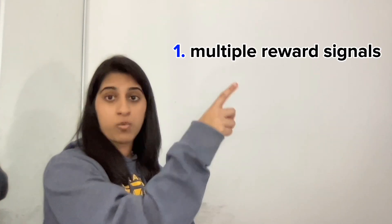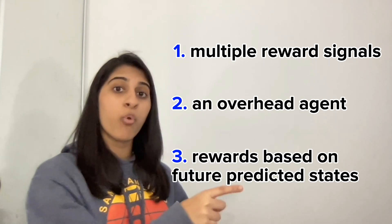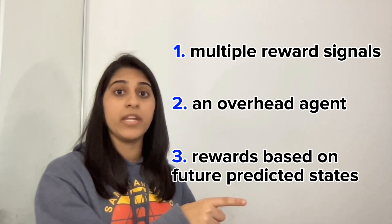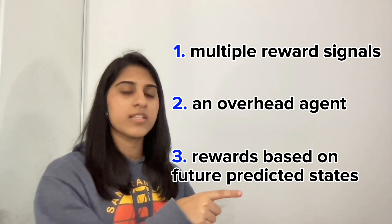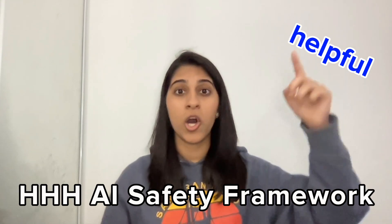Currently, people in the industry are trying new methods to solve this reward hacking issue, including my work with PhD students from Berkeley and Stanford. Some of these methods are having multiple reward signals, having another agent check the current agent's actions, and rewards based on anticipated future states to predict that the AI agent doesn't do any bad long-term planning. Overall, the goal of this research is to make helpful, honest, and harmless AI, and I'm excited to see where the work in this space goes.